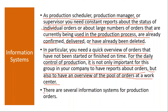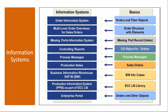There are several information systems for production orders. We have many reports in the system. The most commonly available information system is the order information system, where you can track your orders — production orders, planned orders, and their corresponding objects. I will show this in the system.